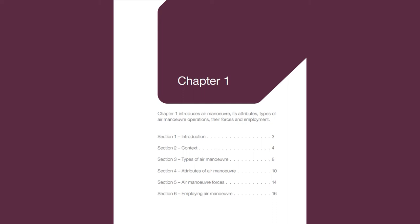Section 2, Context. Air power. Air power can influence the behaviour of actors and the course of events through four roles: control of the air, intelligence, surveillance and reconnaissance, attack and air mobility. Air mobility has three mission types: air lift, air-to-air refuelling and personnel recovery. Air lift is the ability to transport personnel, equipment and material. It is divided into hub and spoke operations, airborne operations, aeromedical evacuation and special air mobility operations. Hub and spoke operations use strategic and tactical air transport aircraft to conduct inter and intra theatre air movement respectively.